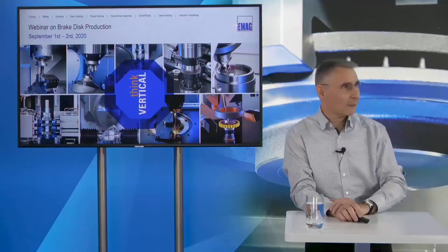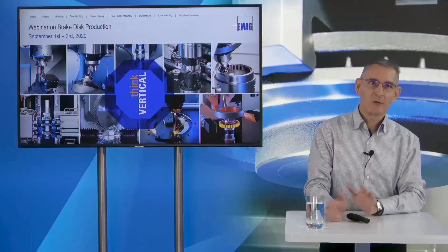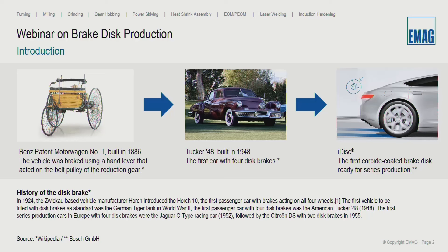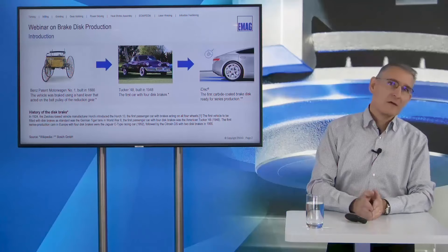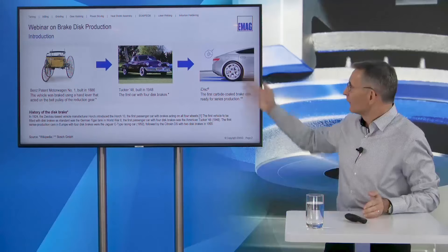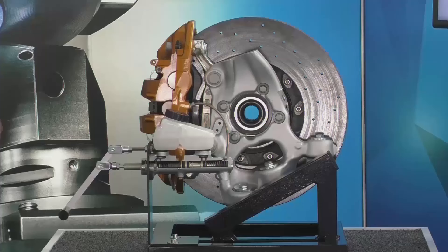Good morning everybody, it's also my pleasure. Today we want to show you something about brake disc manufacturing, but first let's start with a short introduction about brake systems. As you can see, already Carl Benz was using a brake system on his Benz patent motorbike number one. Then the first car with four brake discs was the American model Tucker 48, and you can also see the current situation with coated brake discs used, for example, in a Porsche car.